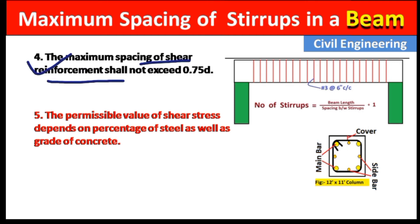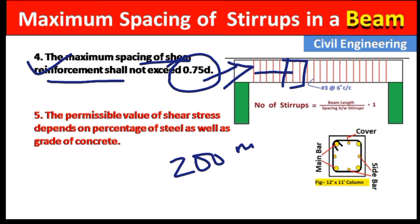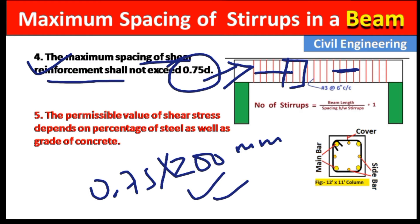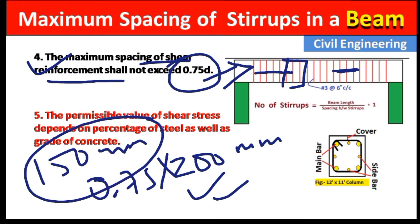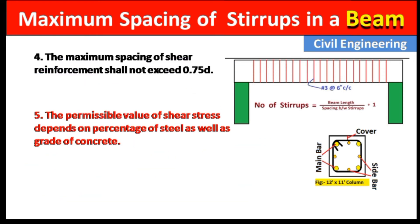Point four: the maximum spacing of shear reinforcement shall not exceed 0.75d, where d is the effective depth of the beam. For example, if the effective depth of our beam is 200 mm, then the maximum spacing between stirrups should not be more than 0.75 × 200 = 150 mm.